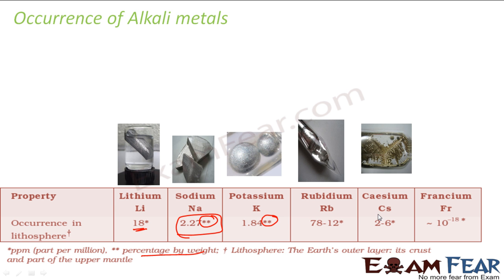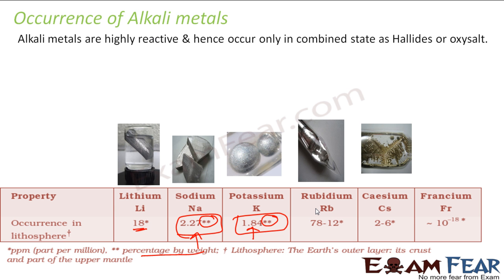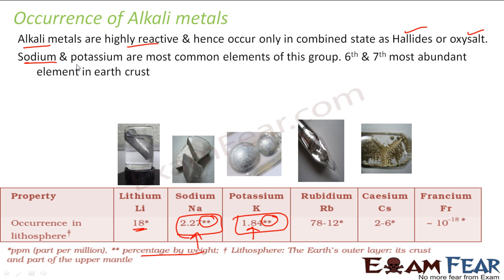Sodium and potassium have a good percentage — at least 2.27% by weight — and potassium is 1.84% by weight in the earth's crust. Alkali metals as such are very reactive and occur only in combined state as halites or oxy-salts. Sodium and potassium are the sixth and seventh most abundant elements in the earth's crust.